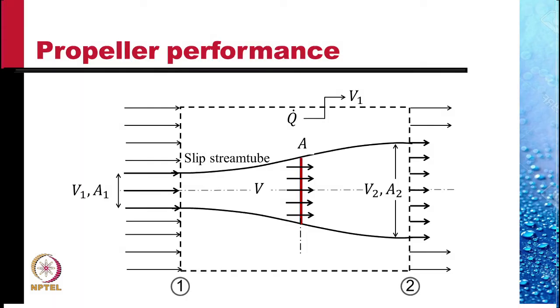Let us consider the flow past the rotor of a windmill. Let us consider that these two black curvilinear lines represent the slip streamline. This is the set of streamlines which constitute the slip stream tube. This is the tube in which all the action is.